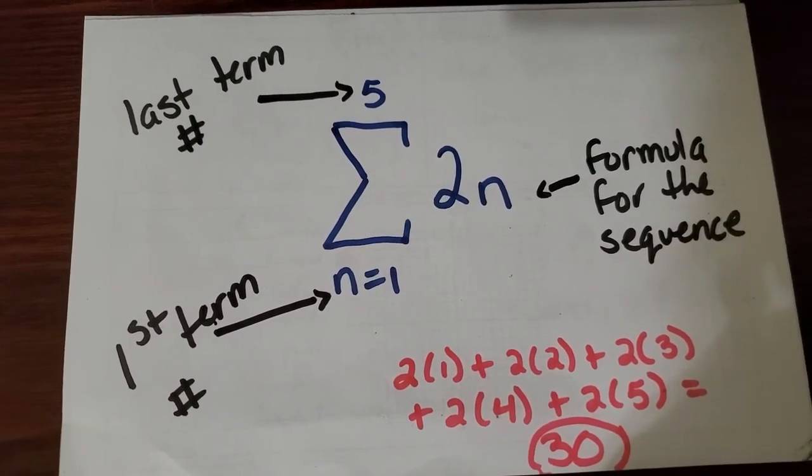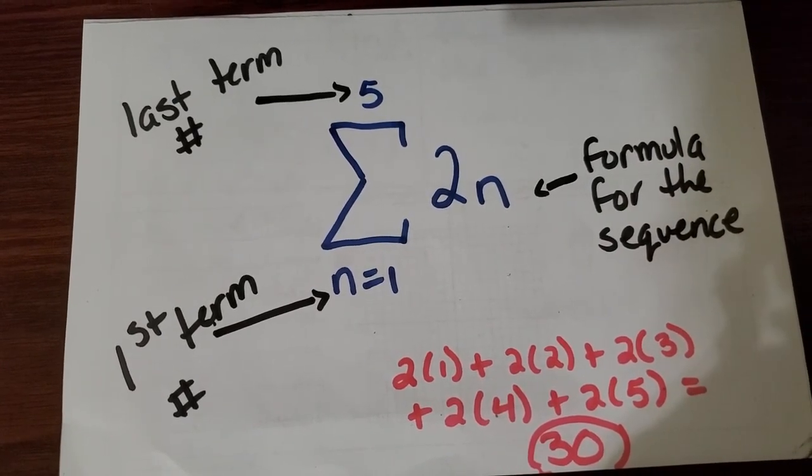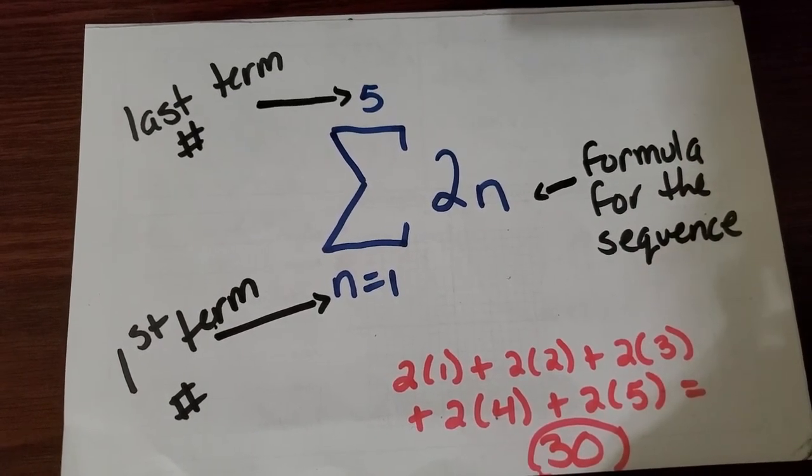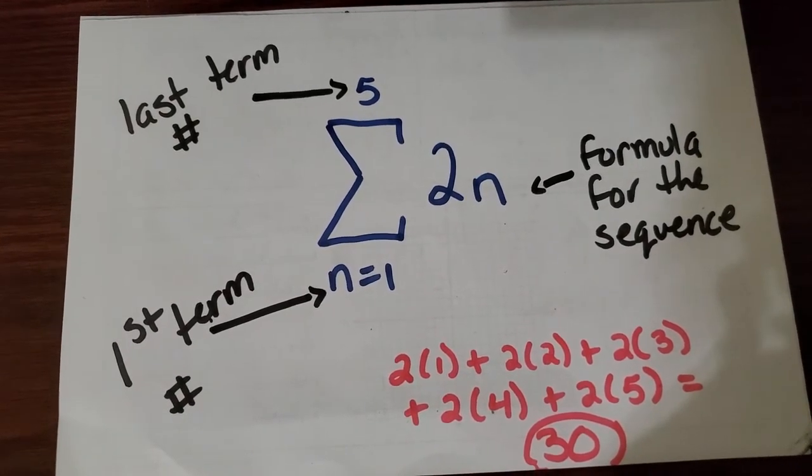So if we were to find the partial sum of this particular sequence, we would add up the first five terms. And we would get a sum of 30.